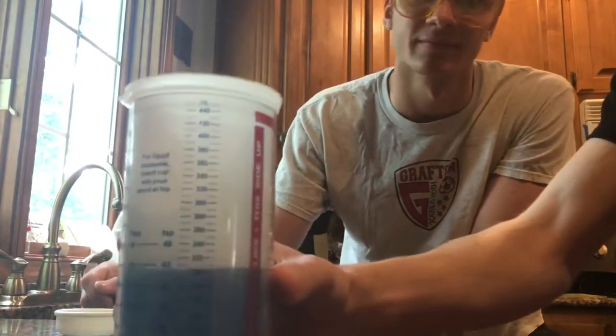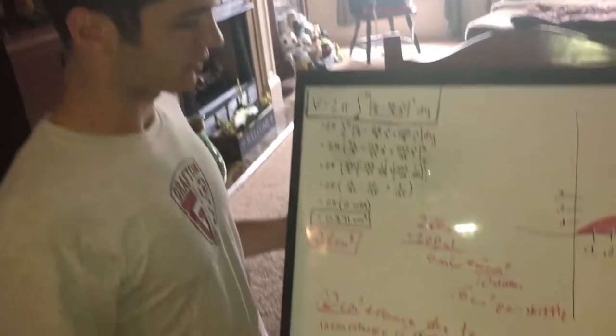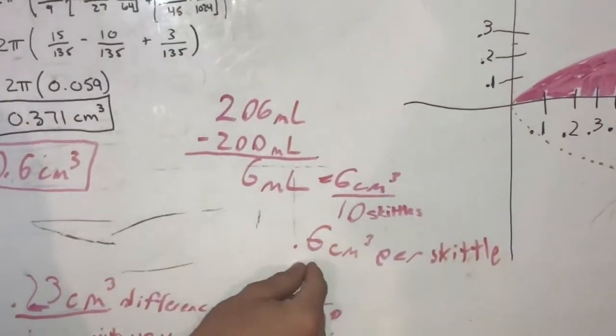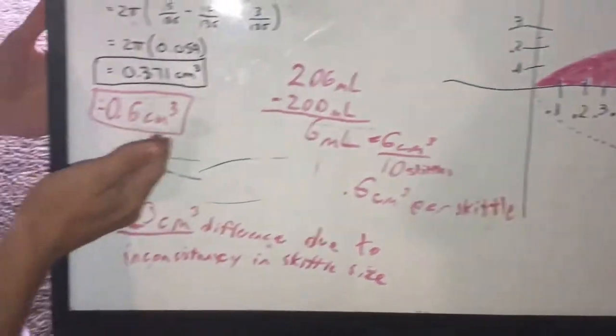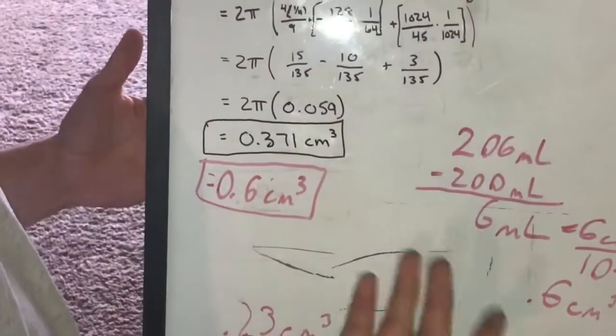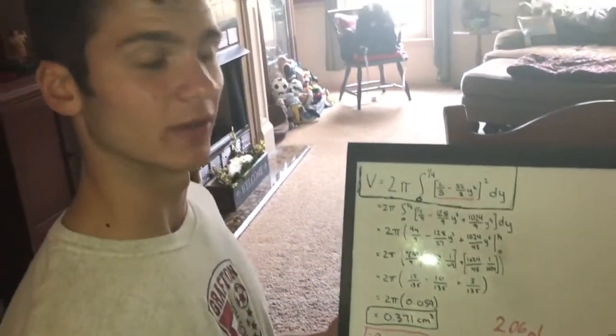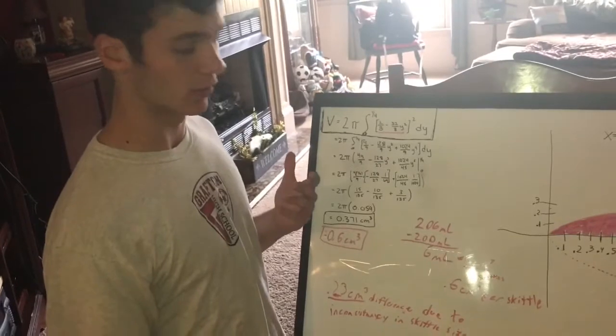And let's take a look at how much it's changed. Due to the water displacement method, after our calculations using some pretty basic math, we found that each Skittle equals 0.6 centimeters cubed. This varies — not greatly, but to a degree — from our theoretical answer of 0.23 centimeters cubed, a difference between our theoretical answer and our actual real-world answer.